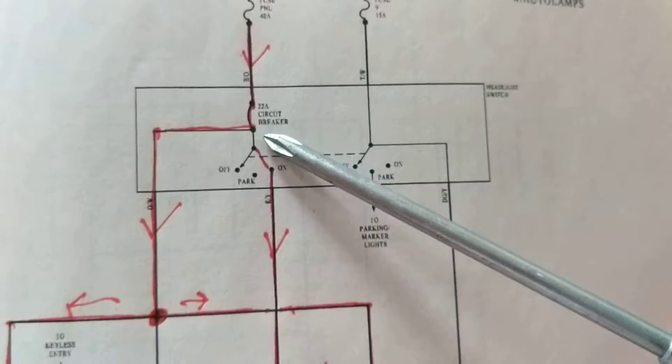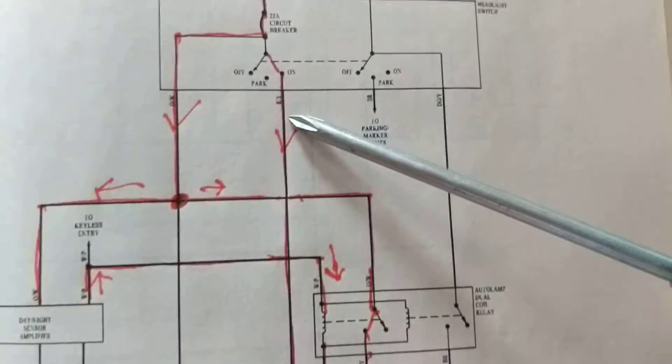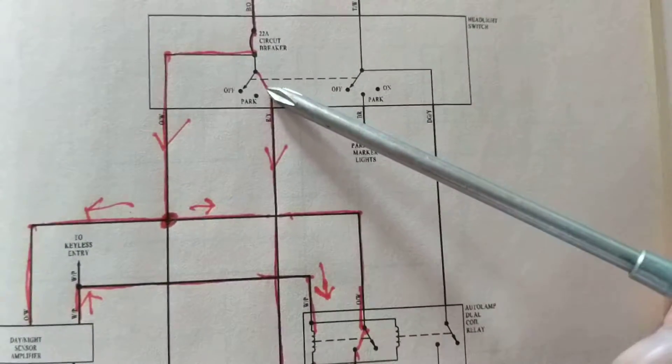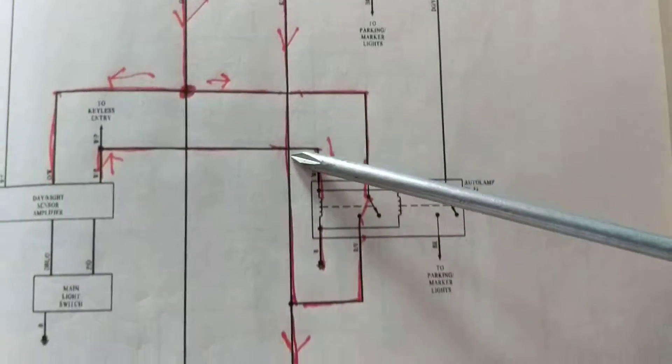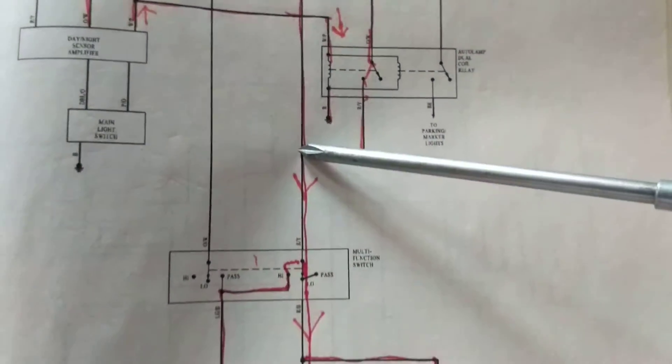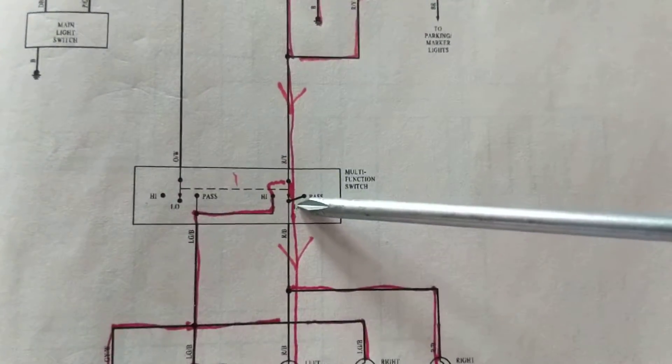Current will flow here through the circuit breaker. We are in the on position which is headlamps. Go through here, go through here, go through here.